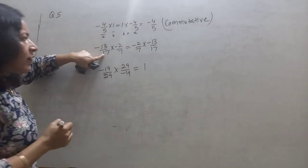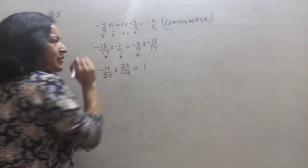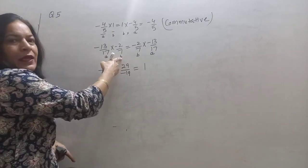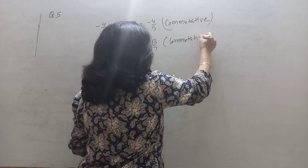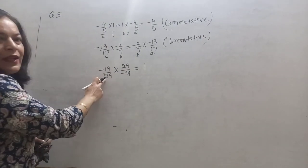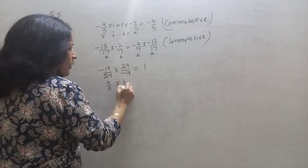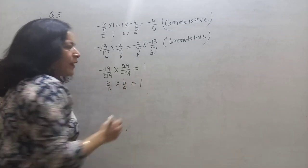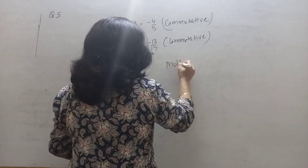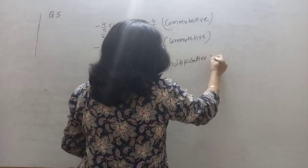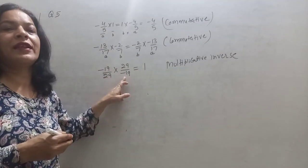Again, for minus 13 upon 17 and minus 2 upon 7, A into B equals B into A — commutative property again. For 19 upon 29 and its reciprocal: if it is A upon B, then the other is B upon A, and their multiplication equals 1. So the property used here is the multiplicative inverse property.